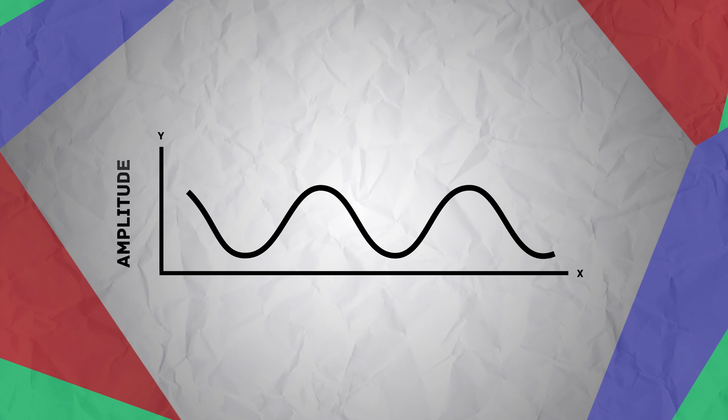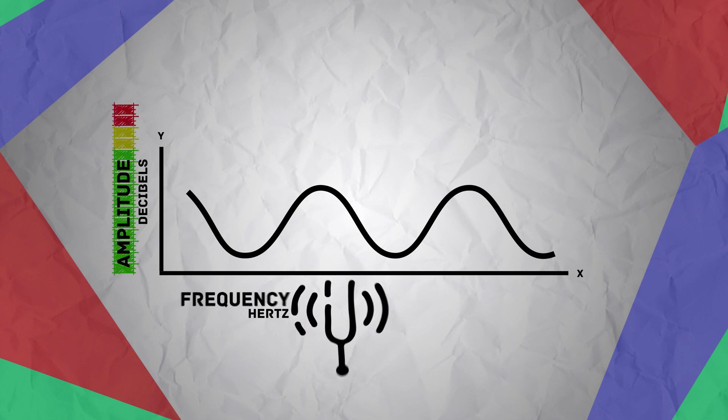These sound waves have two distinct properties that define what they sound like to us: amplitude and frequency, which can be quantified in decibels and hertz, respectively. The amplitude equates to the loudness of the audio signal, and the frequency equates to the pitch. The loudness of sound is measured in decibels, or dB — a measure of intensity relating to how much energy the pressure wave has.